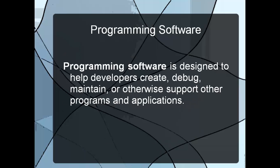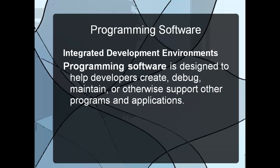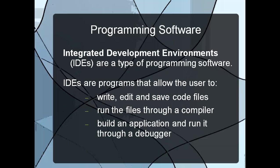The second major category is programming software. This is software — like Alice, which we've used in this class — designed to help developers create, debug, maintain, or otherwise support programs and applications. This is where you'd actually create Microsoft Word, or use this software to create Minecraft and edit and update it. Usually programming software is called an integrated development environment, or IDE, which lets you edit and write code, run it through a compiler so it can be translated into a language the computer understands, and then build and run an application.